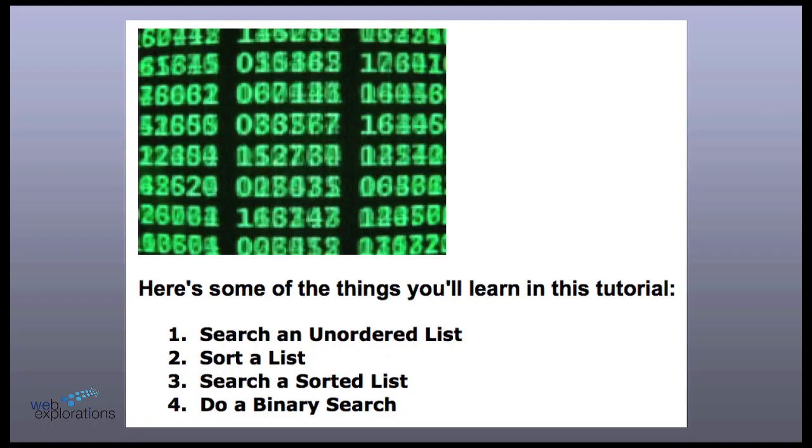All right. So this is a tutorial on lists. And here's some of the things that I'm going to cover. First, I'm going to show you how to search an unordered list. And then we're going to show you how to sort a list. And there's lots of different ways you can do a sort. And once that list is sorted, we'll show you how to search it, which is a lot faster than doing an unordered list. And with that search list, we can also do a binary search.